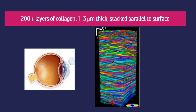Where do tensile strength and corneal elasticity actually come from? They come from the tightly woven collagen fibers in the anterior stroma and the Bowman's membrane. Think of them like a super-strong mesh or netting that resists being stretched and helps the cornea maintain its natural dome shape. There are about 200-plus layers of collagen lamellae, one to three micrometers thick, stacked together parallel to the surface.